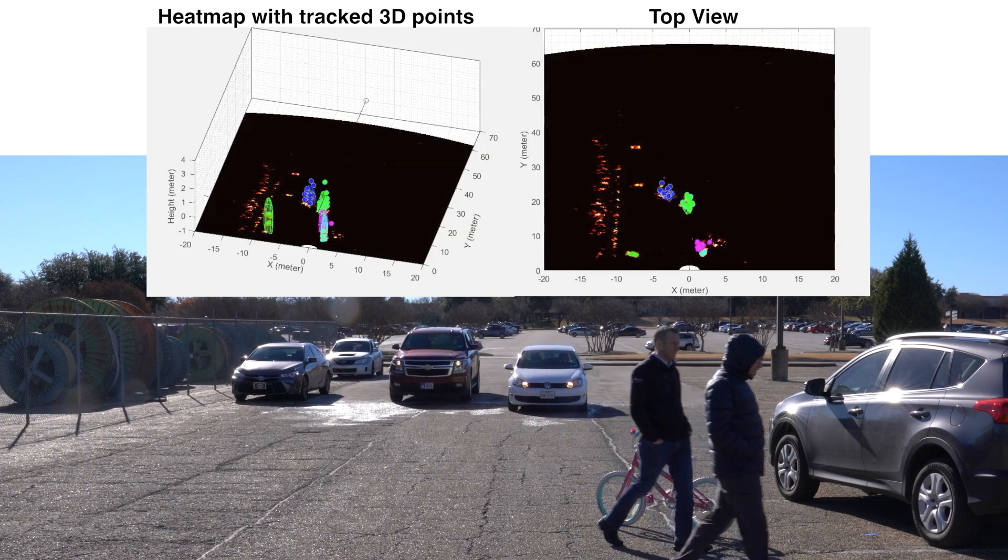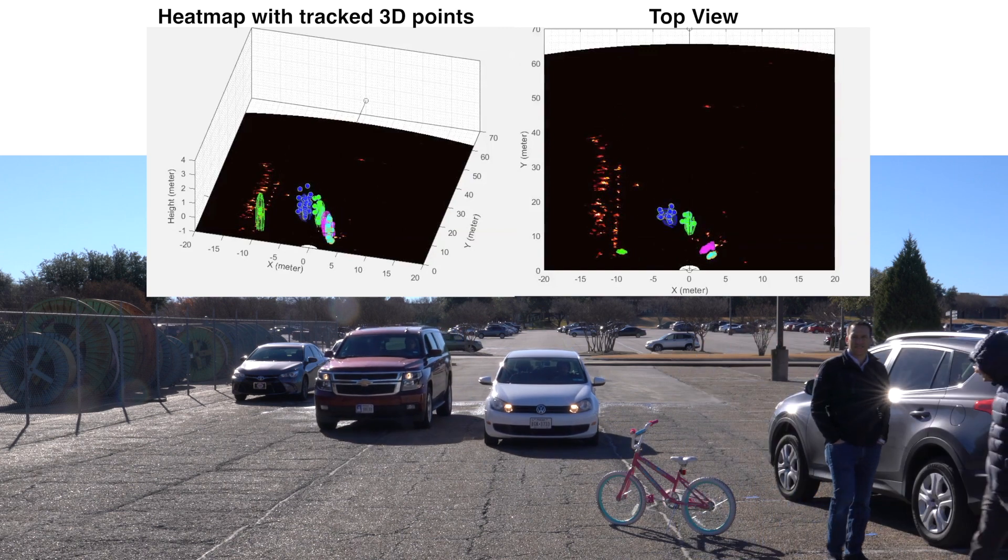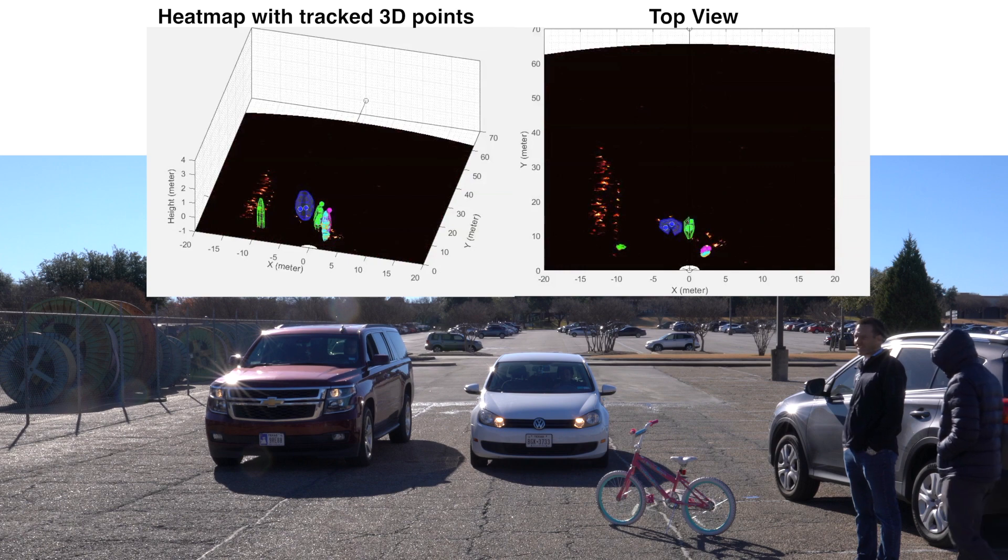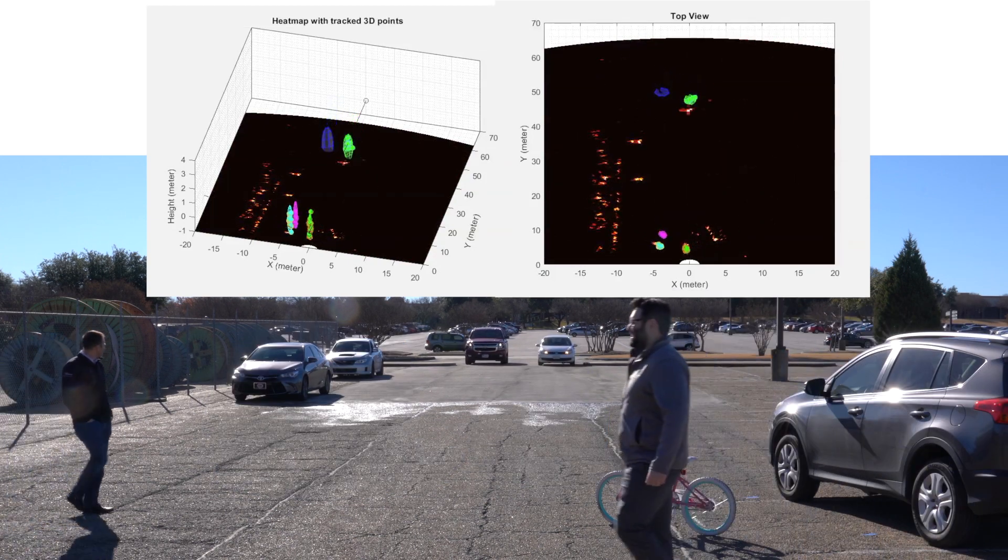In addition, the moving targets are further detected as point cloud followed by 3D group tracking. The height of the ellipse shows the height of the tracked targets.